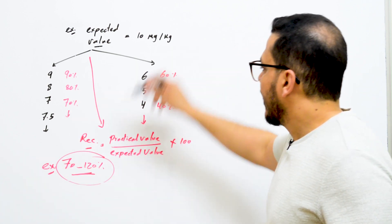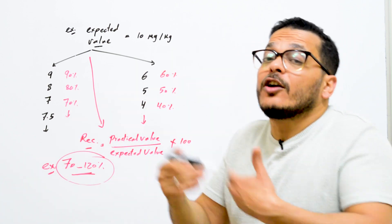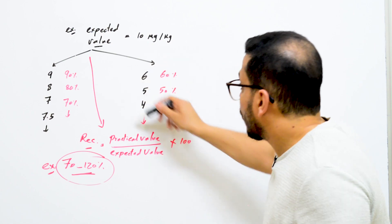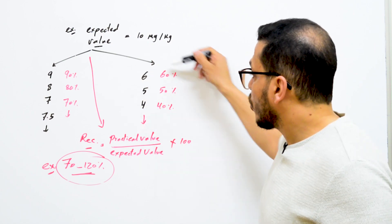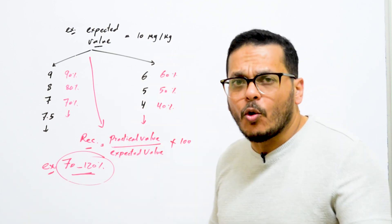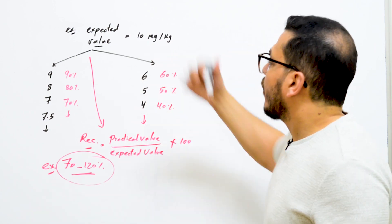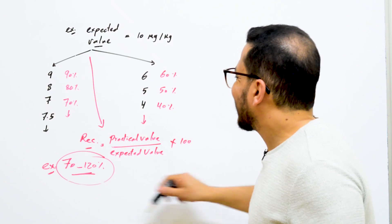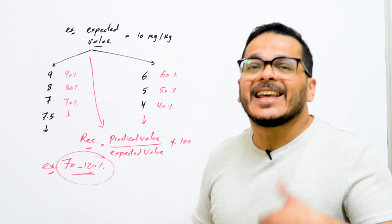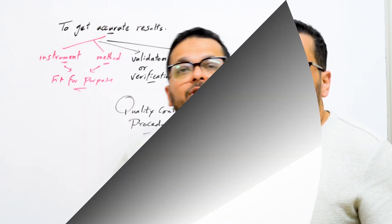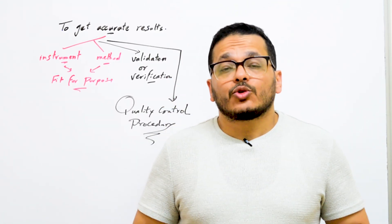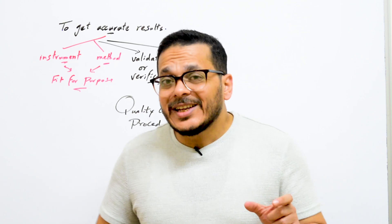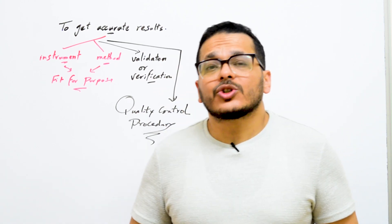However, results of 6, 5, and 4 µg/kg are close together but far from the true value, so these results are inaccurate. To get accurate results, you need to control or reduce errors.